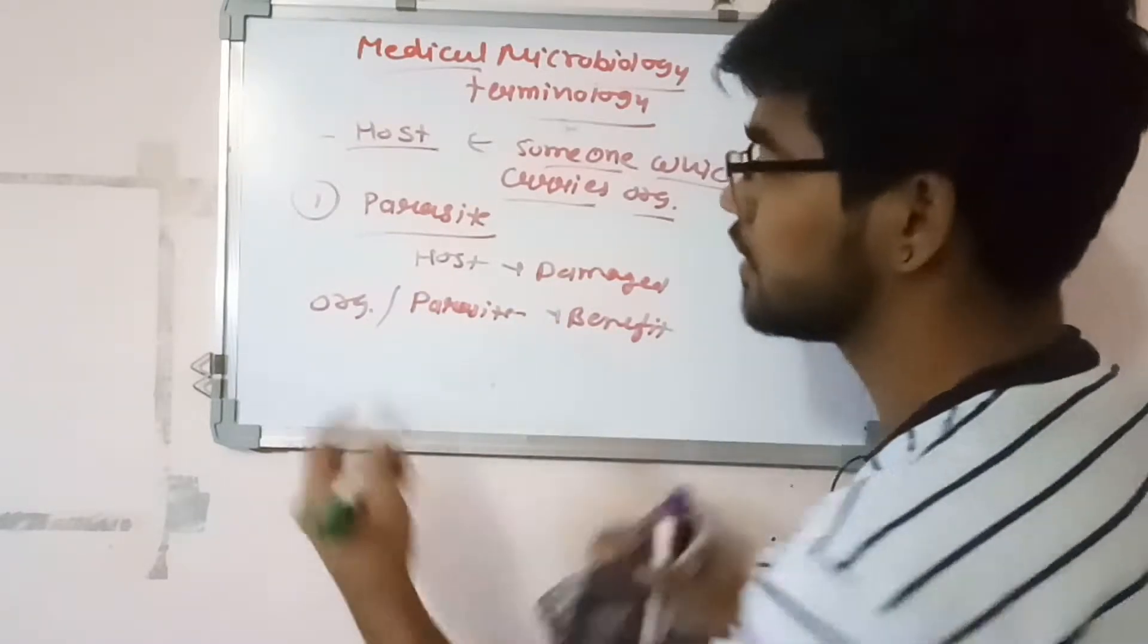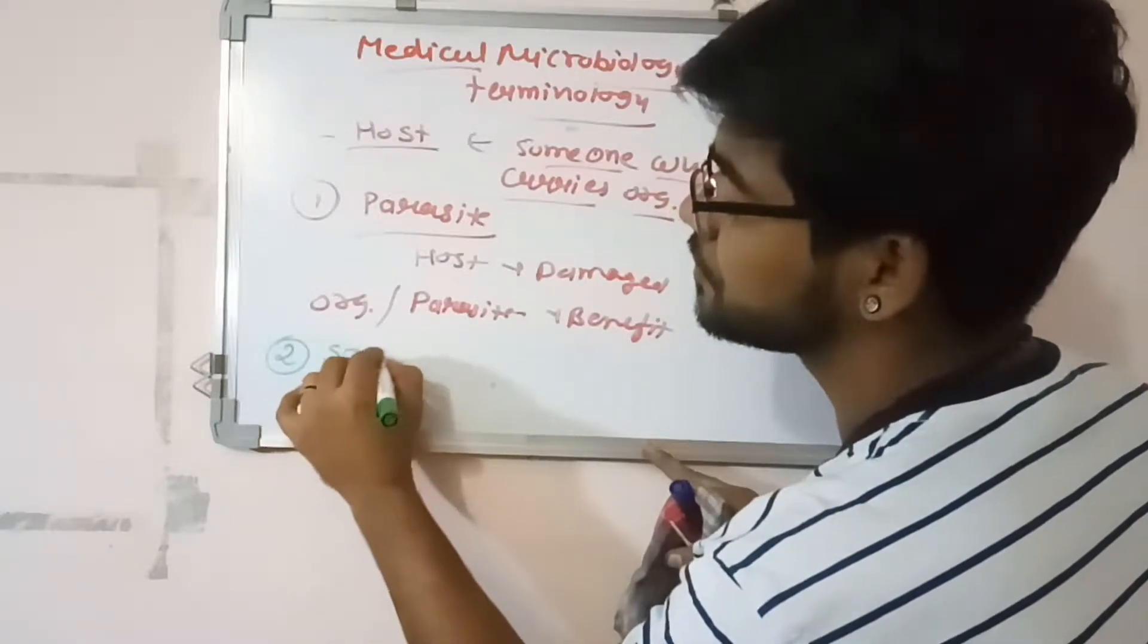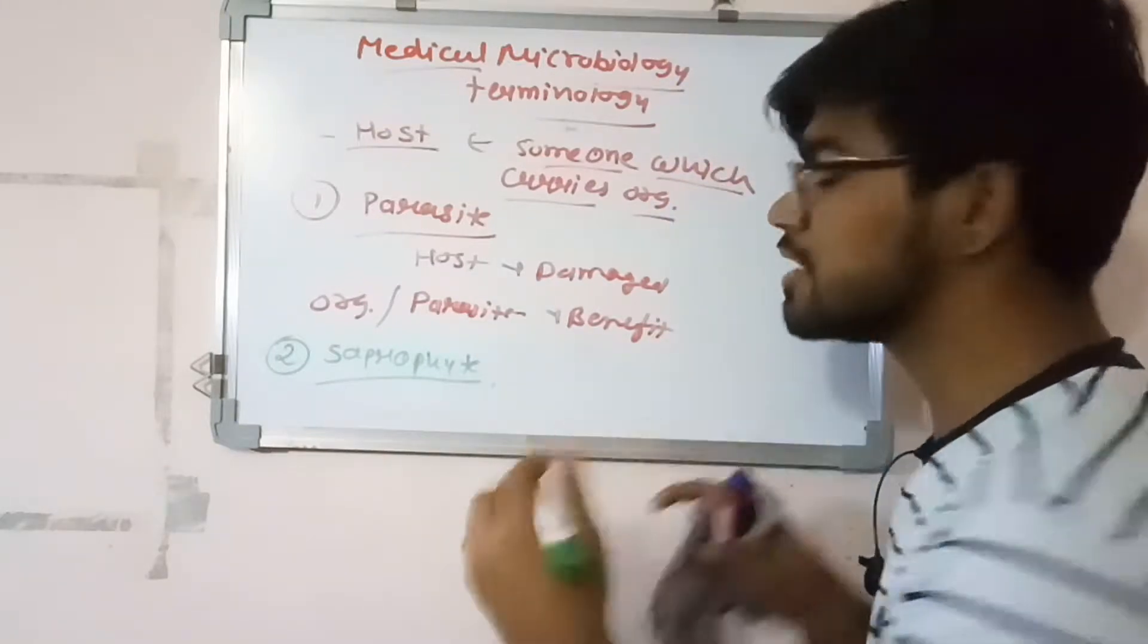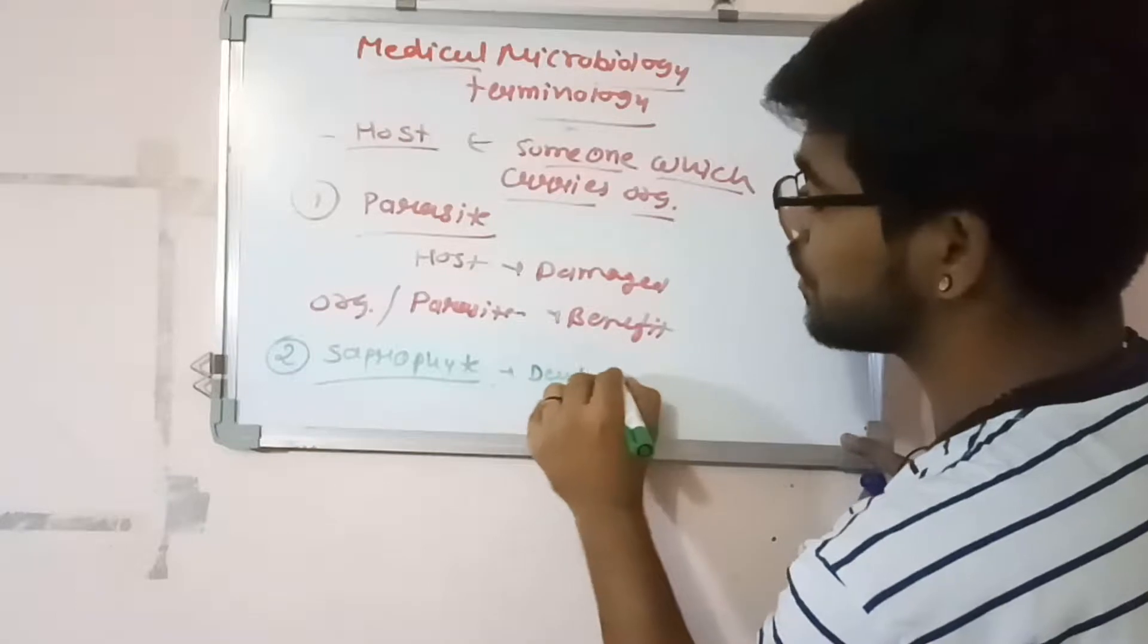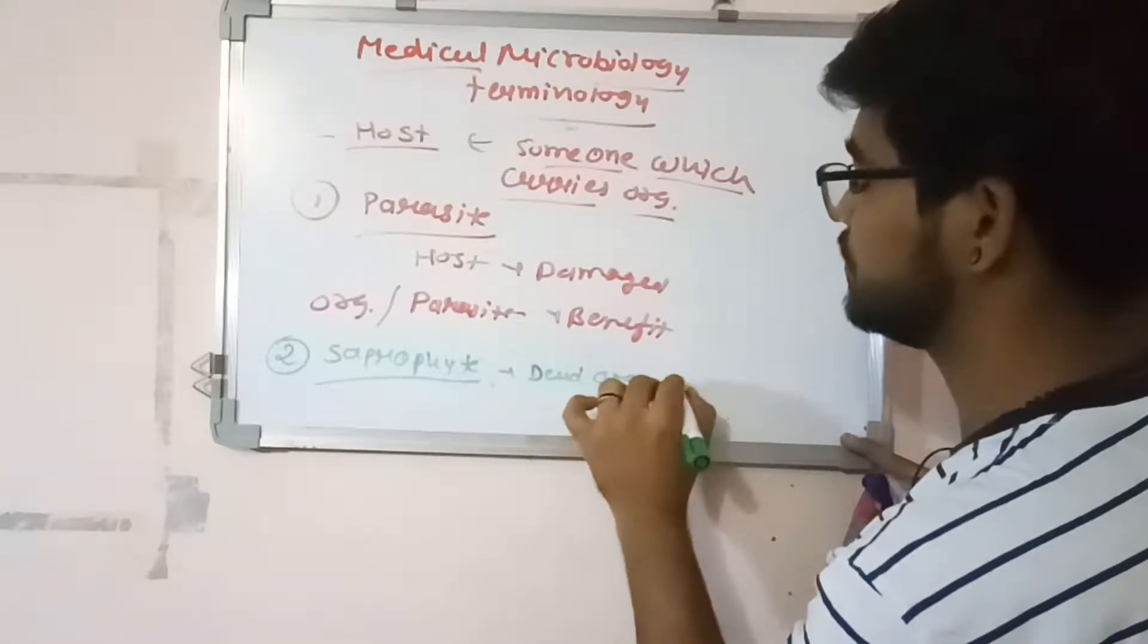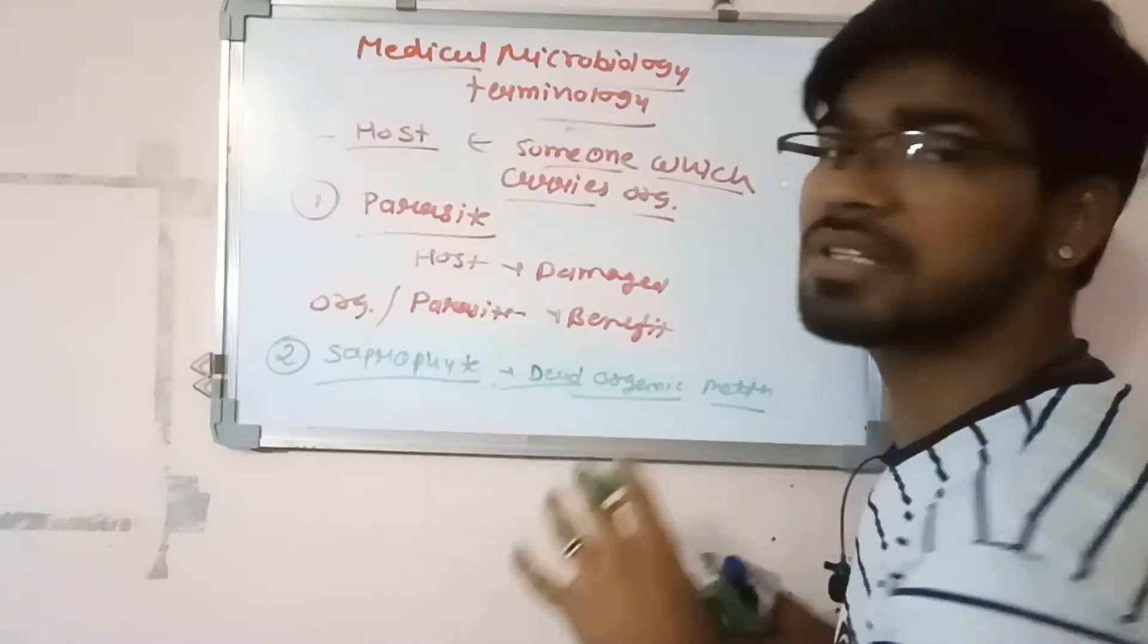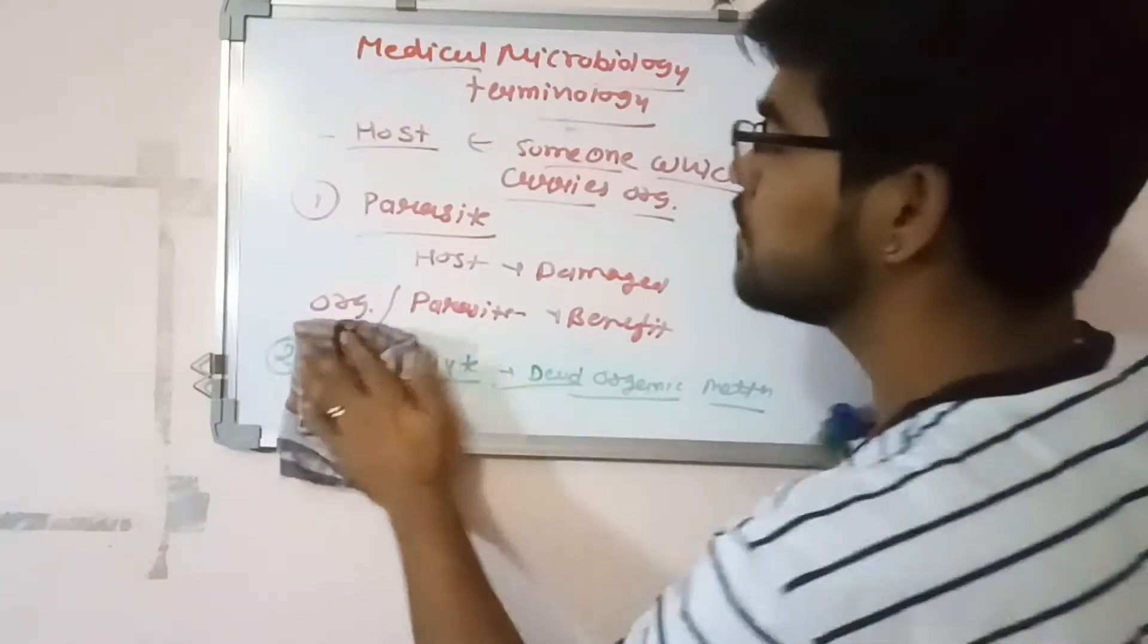The second is saprophytes. Saprophytes is a type of organism which lives on dead organic matter. It is not simply a pathogen but sometimes it causes disease. The third one is commensal.